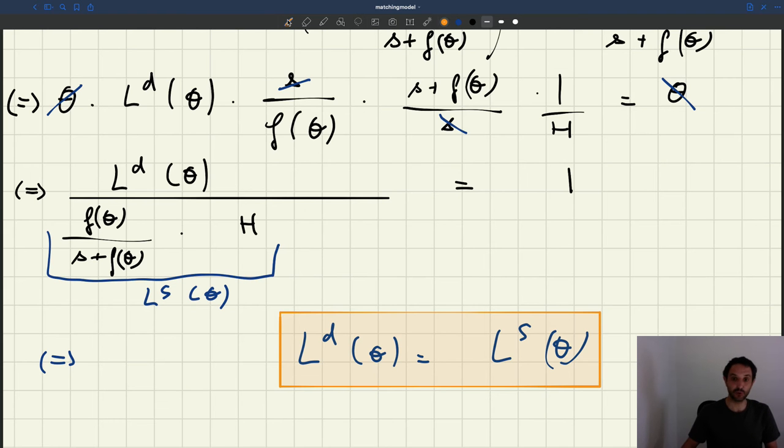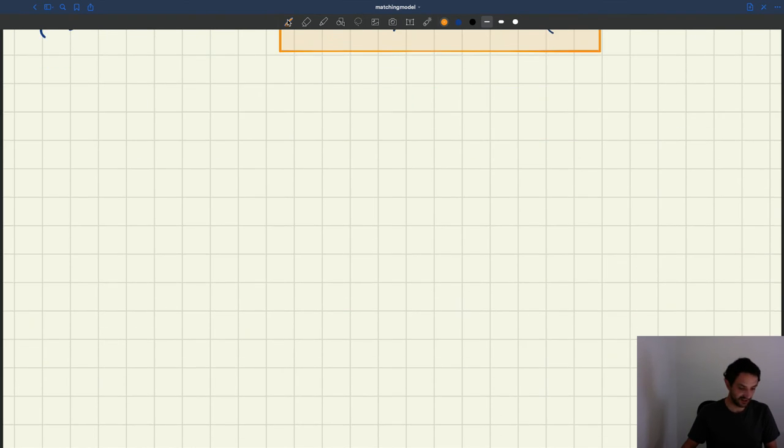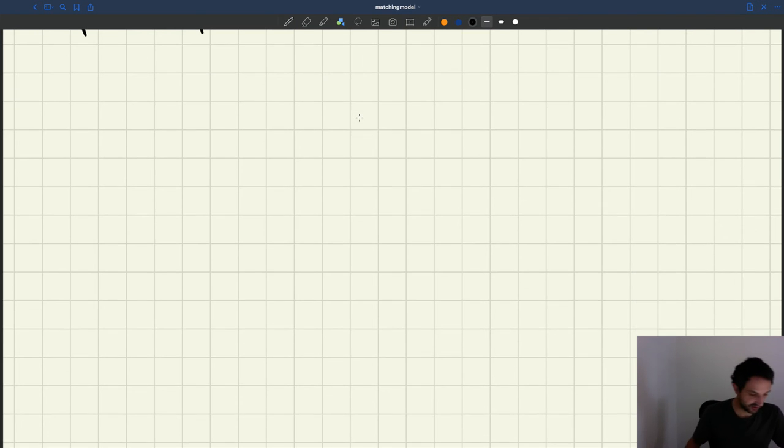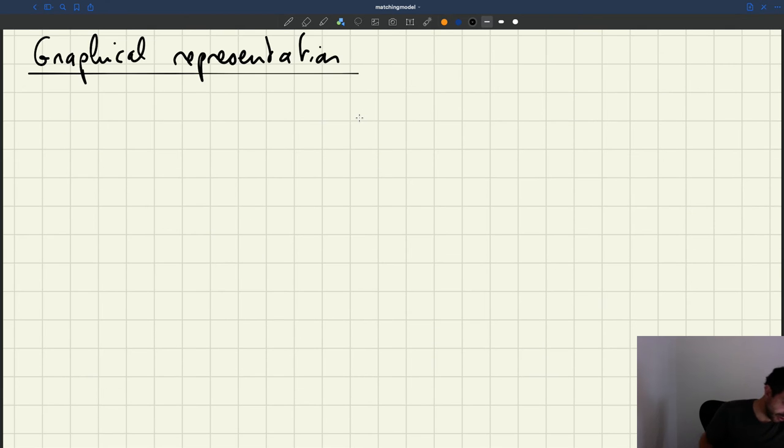So graphically, let's just represent our equilibrium condition. Okay, so let's represent it graphically. So we're going to have employment on the x-axis.